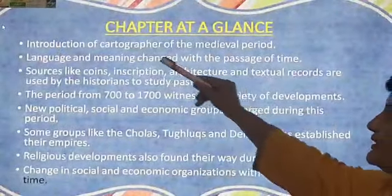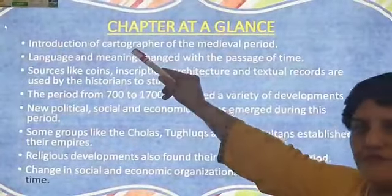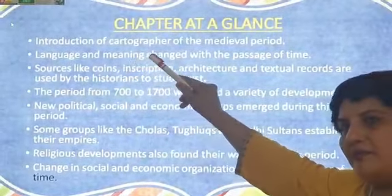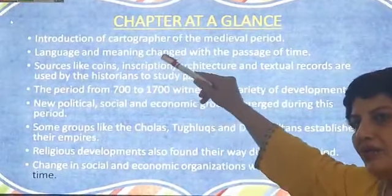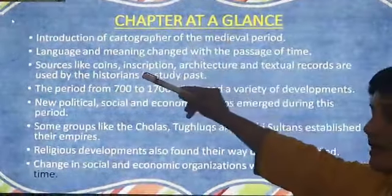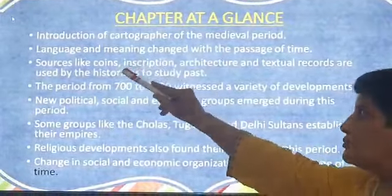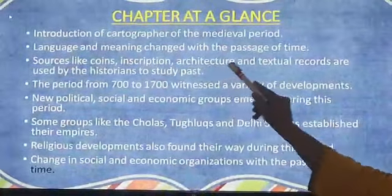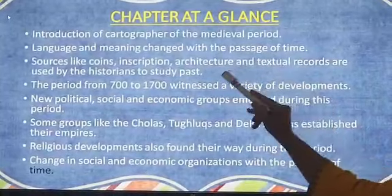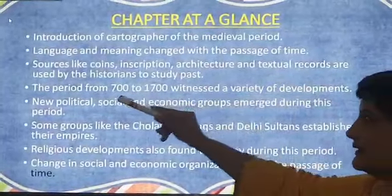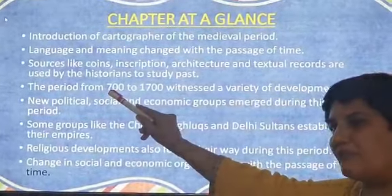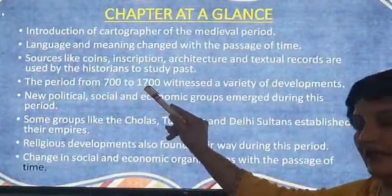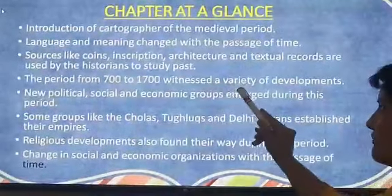What we will read in this chapter: we will read about the cartographers of the period, the map makers, language and meaning, and how they changed over time. We will read about the historians who used coins, inscriptions, architecture and textual records to write their history. We will also read about the history of 700–1700 AD which witnessed a variety of developments.